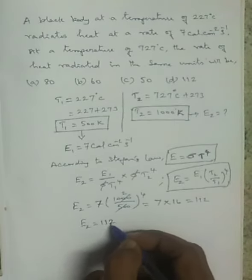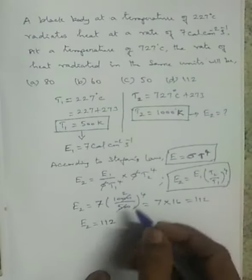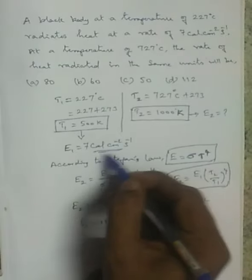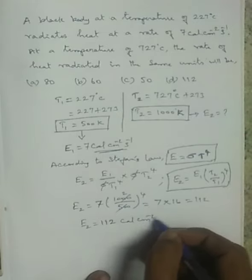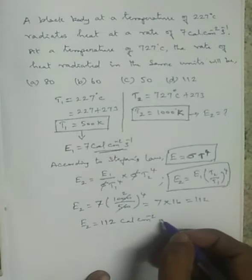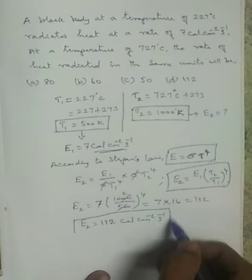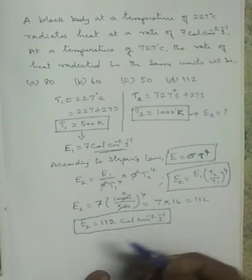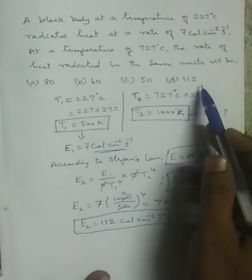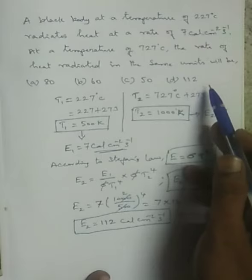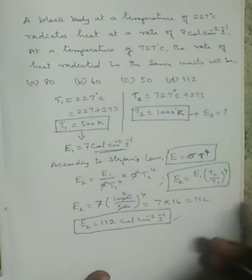So E2 is equal to 112. This is the answer. The unit is calories per centimeter squared per second. The options are 80, 60, 50, 112 — so option D is the answer: 112 calories per centimeter squared per second.